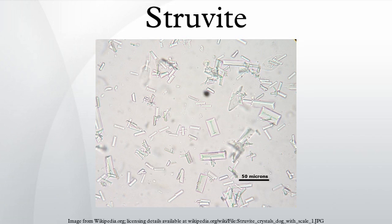Storvite is readily soluble in acid. Storvite urinary stones and crystals form readily in the urine of animals and humans that are infected with ammonia-producing organisms. They are potentiated by alkaline urine and high magnesium excretion. They are also potentiated by a specific urinary protein in domestic cats.